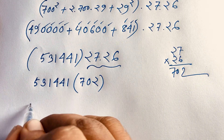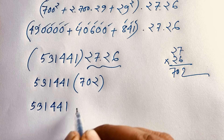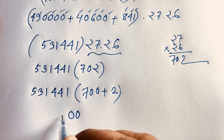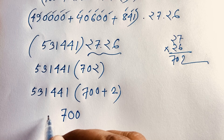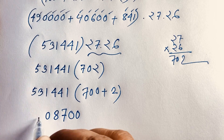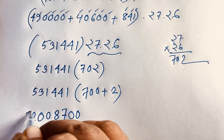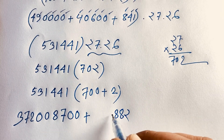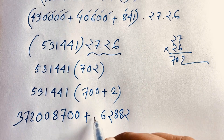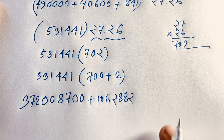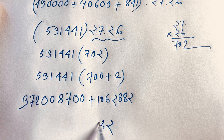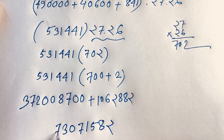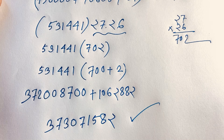Now 531441 times 702: writing 702 as 700 plus 2, we compute 531441 times 700 equals 372008700, and 531441 times 2 equals 1062882. Adding these gives our final answer: 373,071,582. This is our final answer to this math olympiad question.